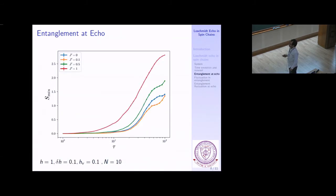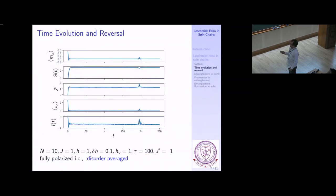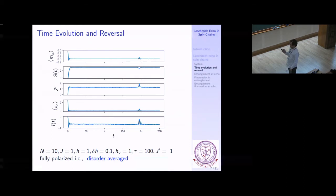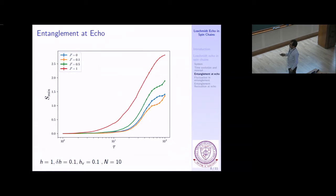We focus on entanglement because it is numerically cleaner. We start with a fully polarized state, which has zero entanglement. Time evolution generates a large amount of entanglement, and then at the reversal point we have done the sign flip of the Hamiltonian. Near t=2τ, the entanglement dips from its typical value. Ideally, if it was a perfect reversal — if δh was zero — it would dip all the way back to zero at exactly t=2τ. We ask: for these parameter values, to what small value does it dip?